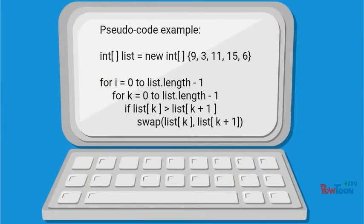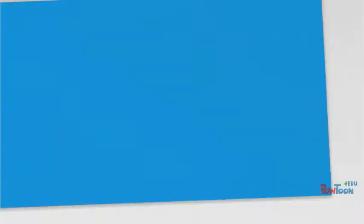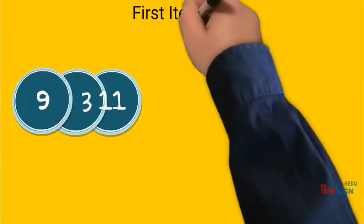The basic idea of bubble sort is to loop through a list and compare each element to the next element in the list. If the current element is greater than the next element, then we need to swap the two elements. We then continue looping through the list, making comparisons and swaps until there are no swaps left to make. When there are no swaps left to make, the list is sorted.